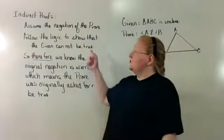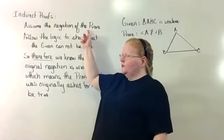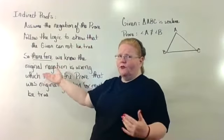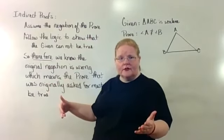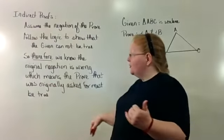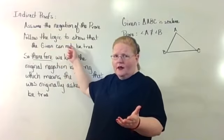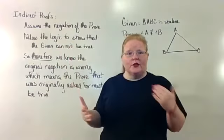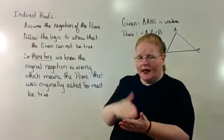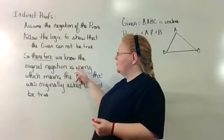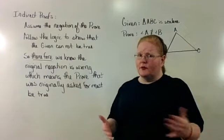An indirect proof is when you assume the negative of the proof is true. And if you assume the negative of the proof is true and you follow that logic through as though it was the given kind of information, when you follow it through, you'll come to find out that the given that they actually did give you cannot be true. And if that's the case, we know that that can't happen because that has to be true. So since that has to be true, then we know that the original negation is wrong, which means that our original proof is correct. And thus it has been proven.